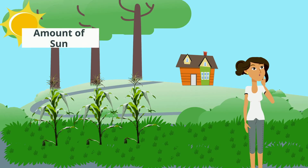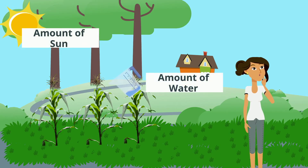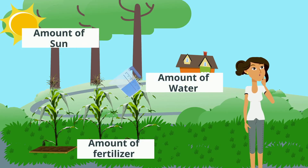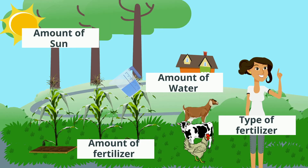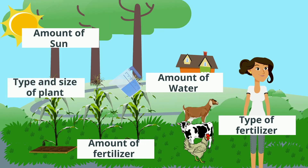These factors include: amount of sun, amount of water, amount of fertilizer, type of fertilizer, and type and size of plant.